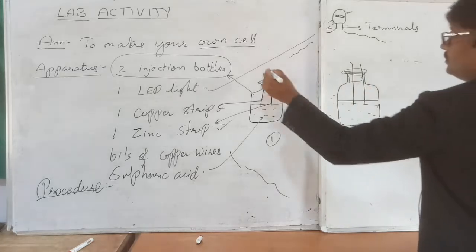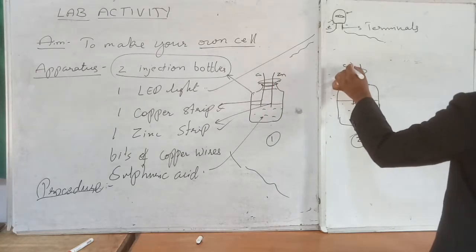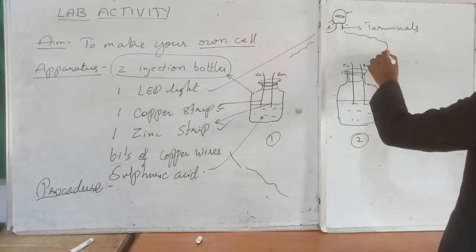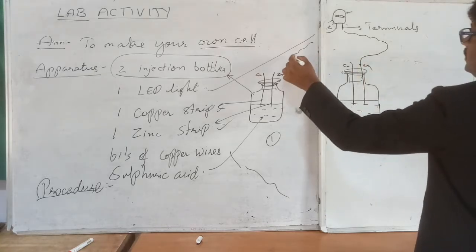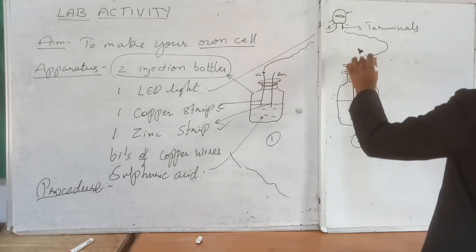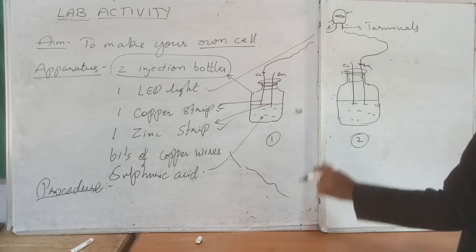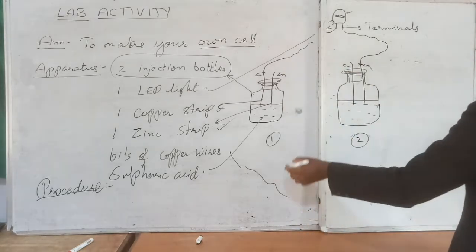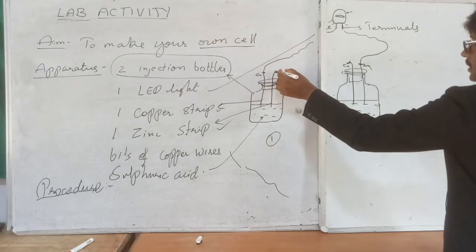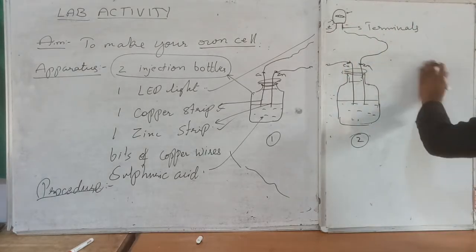Now connect these terminal wires: connect the copper wire from the positive terminal to the zinc strip, and the copper wire from the negative terminal to the copper strip. The remaining free zinc and copper strip terminals should be connected to each other with another bit of copper wire to complete the circuit.